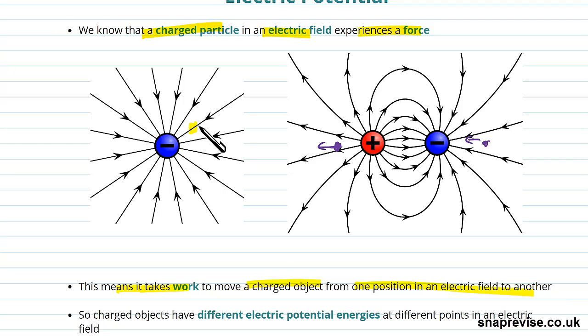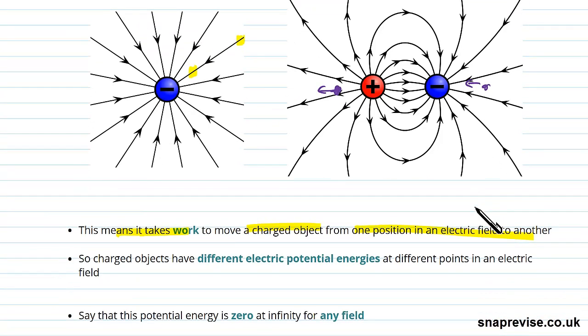So for instance, if we had a positive charge here, we wanted to move it out to here, we'd have to do work against this electric field. It wants to pull us closer to it and we're having to push it further away. Therefore, we're doing work on it to move it away from the negative particle. And the same here. So what that means is that charged objects will have different electric potential energies at different points in an electric field.